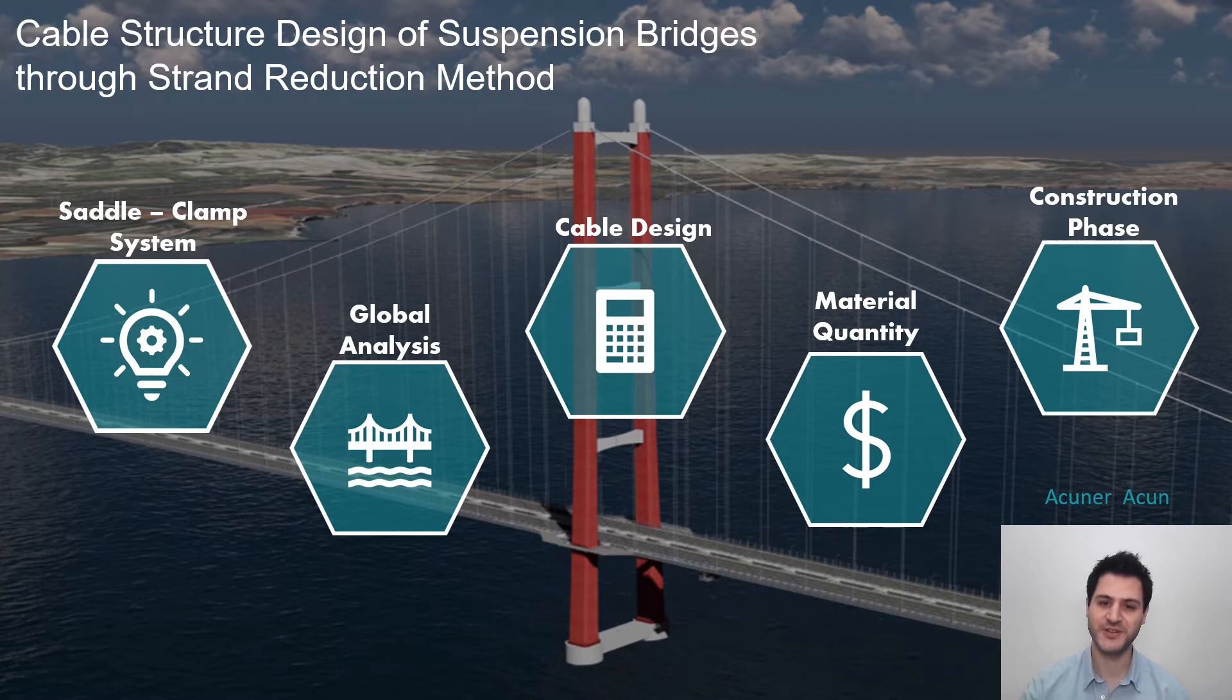The strand reduction method is called saddle clamp system. First, I will introduce it. Then I will show how design loads are obtained from global analysis model. After that, I will go into detail about verification of cable structures according to design loads. Then I will continue with material quantity reduction provided with this system. Finally, I will show how this method can be constructed.